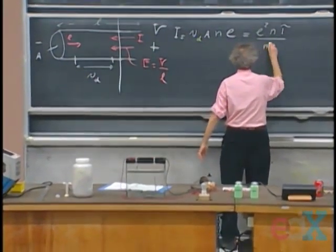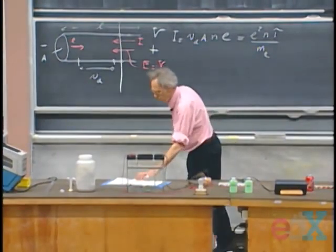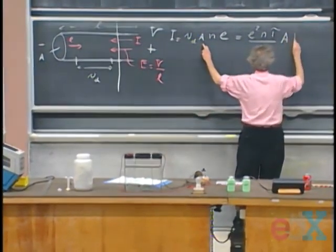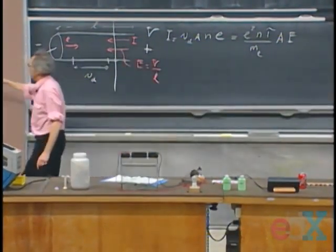I get downstairs the mass of the electron, and then I get A times the electric field E, because I have here is electric field E.